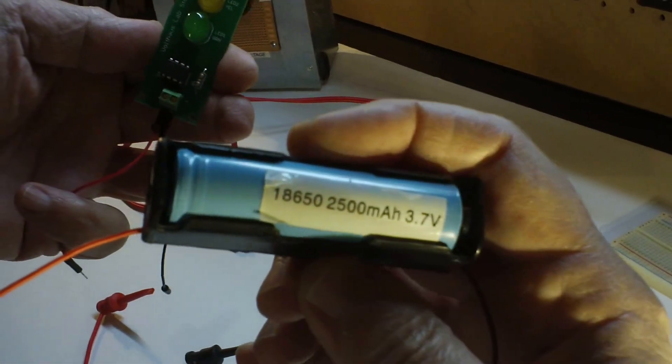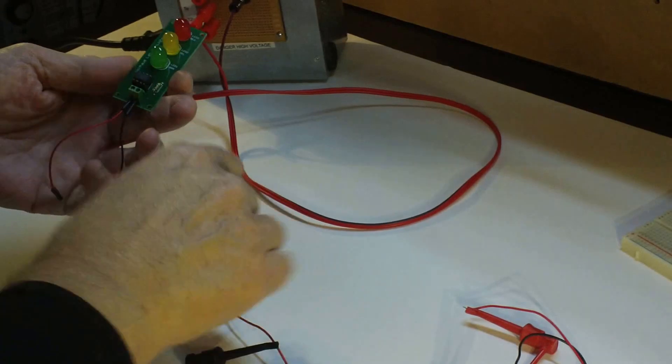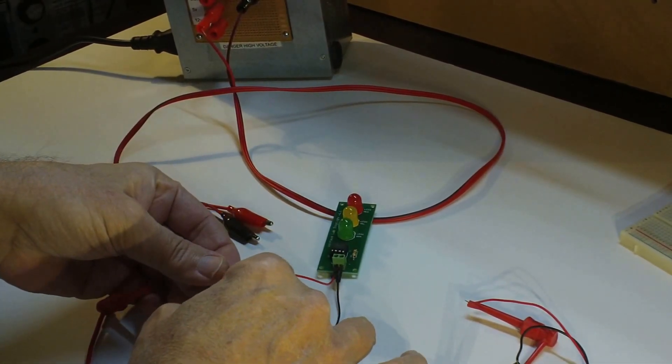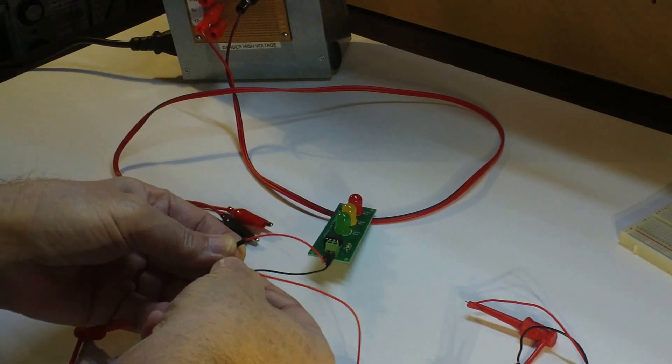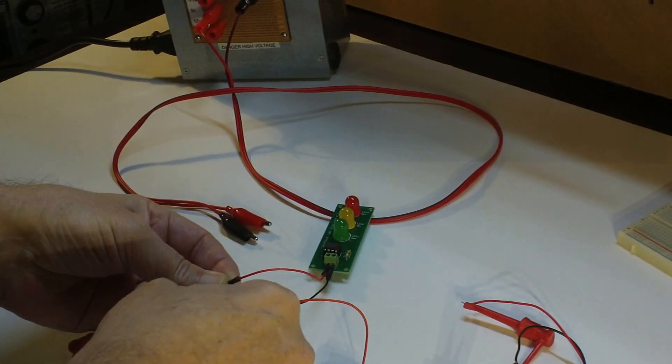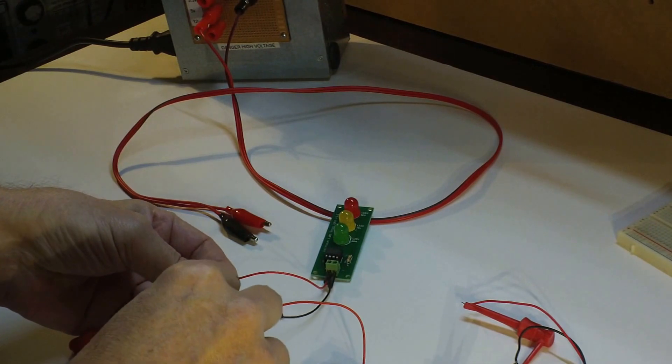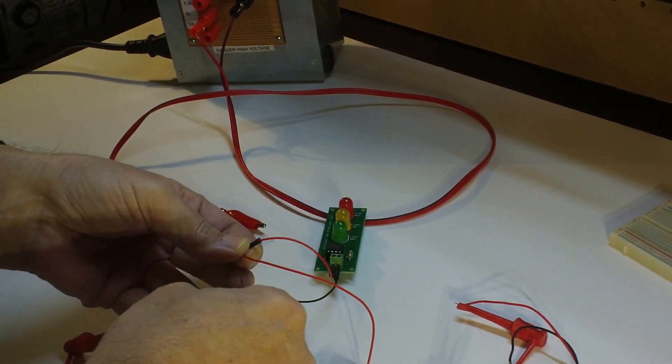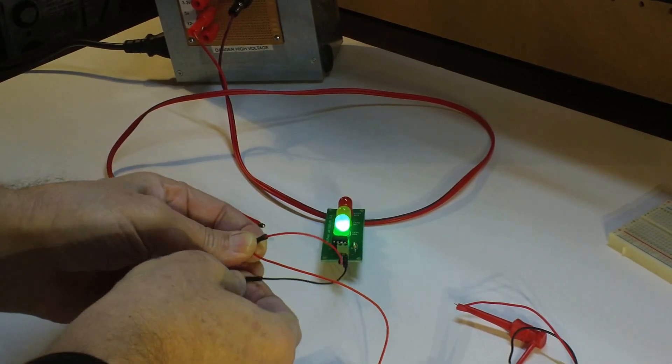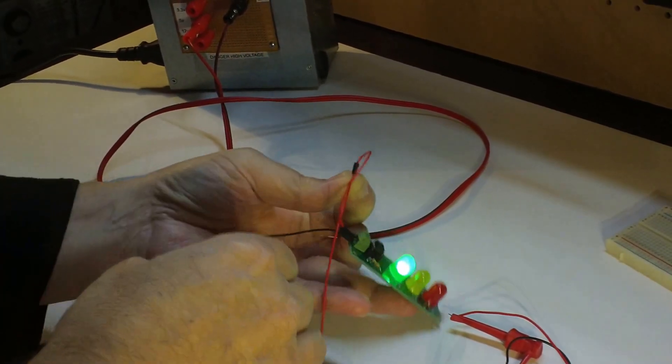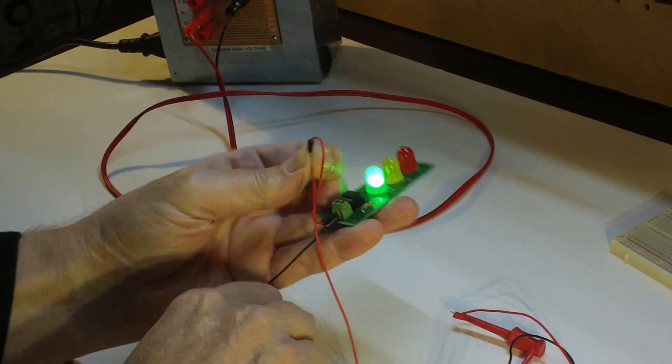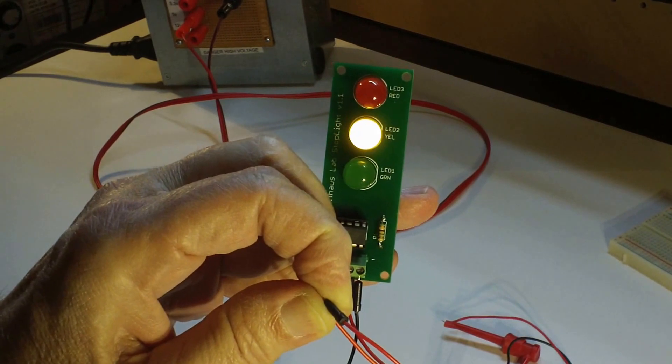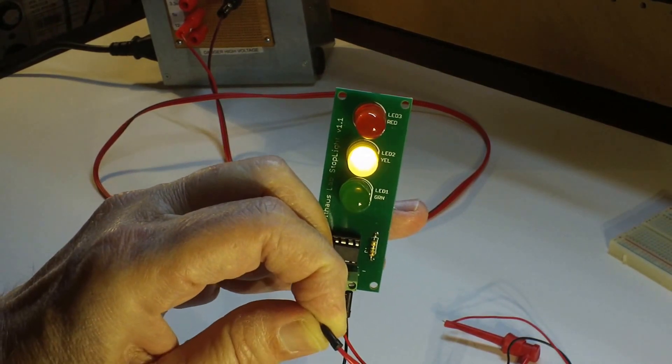Let's try an 18650, 3.7 volts. I'll just try to hold that by hand here. Oh yes, I should have used some clips. But 3.7 volts is operating quite well. And that's of course lithium ion rechargeable.